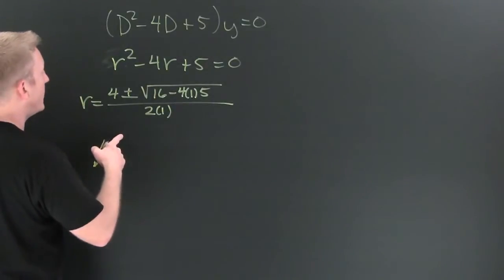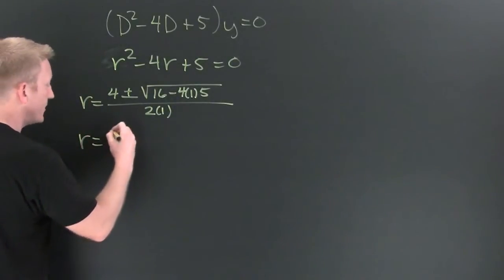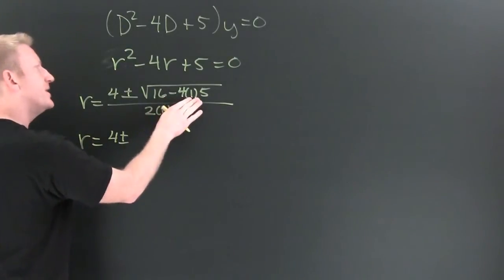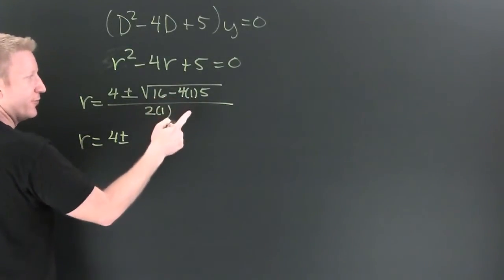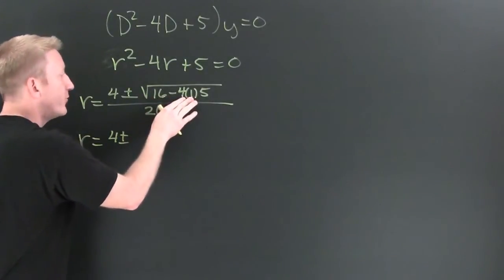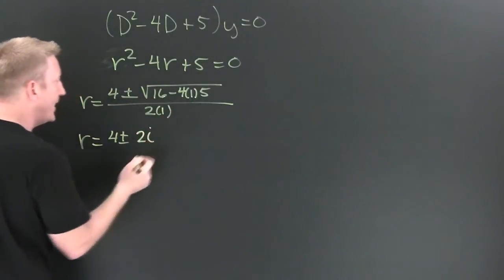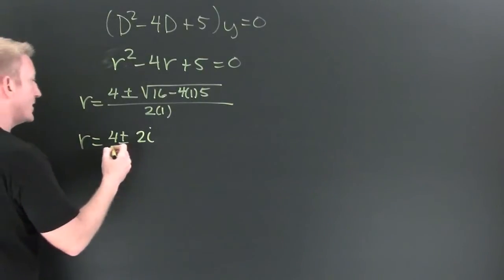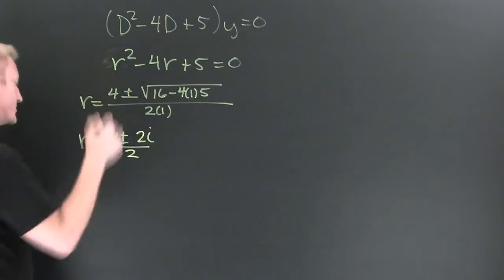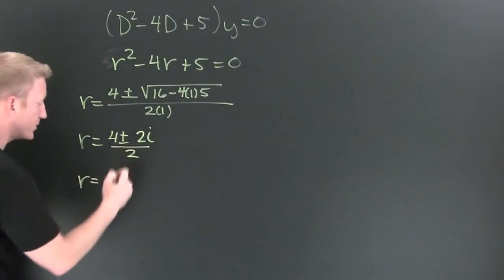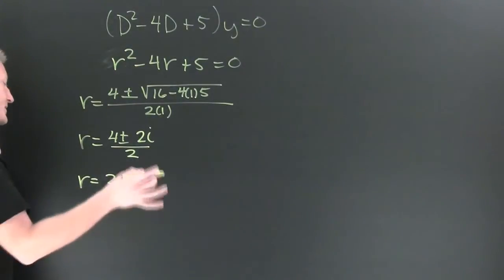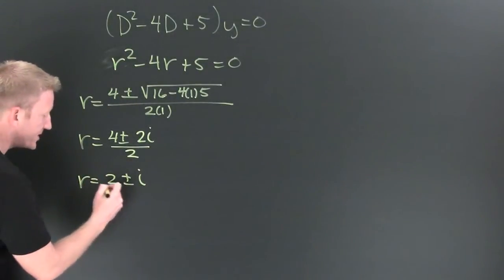So then r is going to be 4 plus and minus, wait for it, 16 minus 20 is minus 4. So this is going to be square root of negative 4, which is 2i over 2. So then r is equal to 2 plus and minus i.